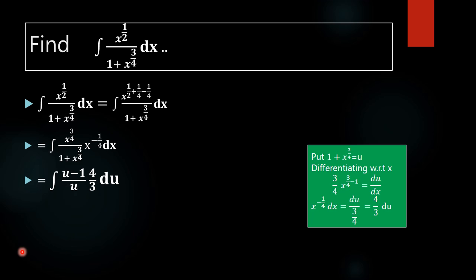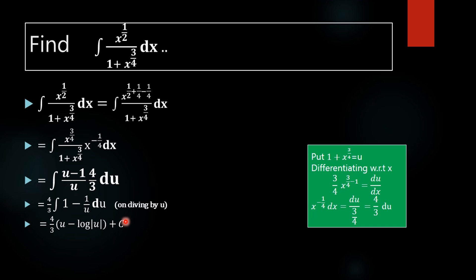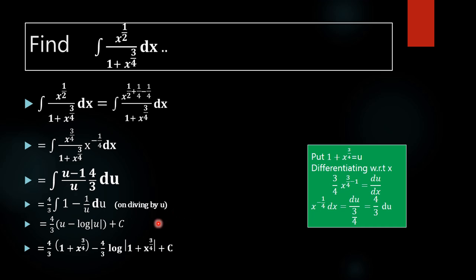Taking 4/3 outside and dividing each term by u, we get 4/3 times the integral of (u minus 1) over u du, which becomes 4/3 times the integral of (1 minus 1/u) du. The integral of 1 is u and the integral of minus 1/u is minus log mod u, plus constant c. Substituting back u equals 1 plus x raised to 3/4, we get 4/3 times (1 plus x raised to 3/4) minus 4/3 times log mod (1 plus x raised to 3/4) plus c.